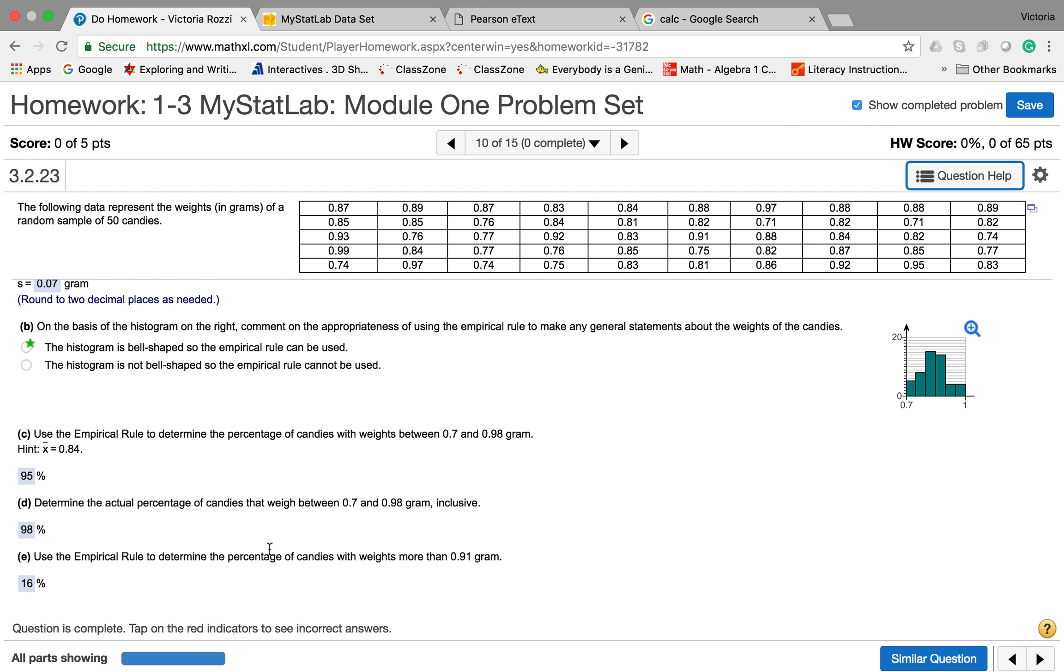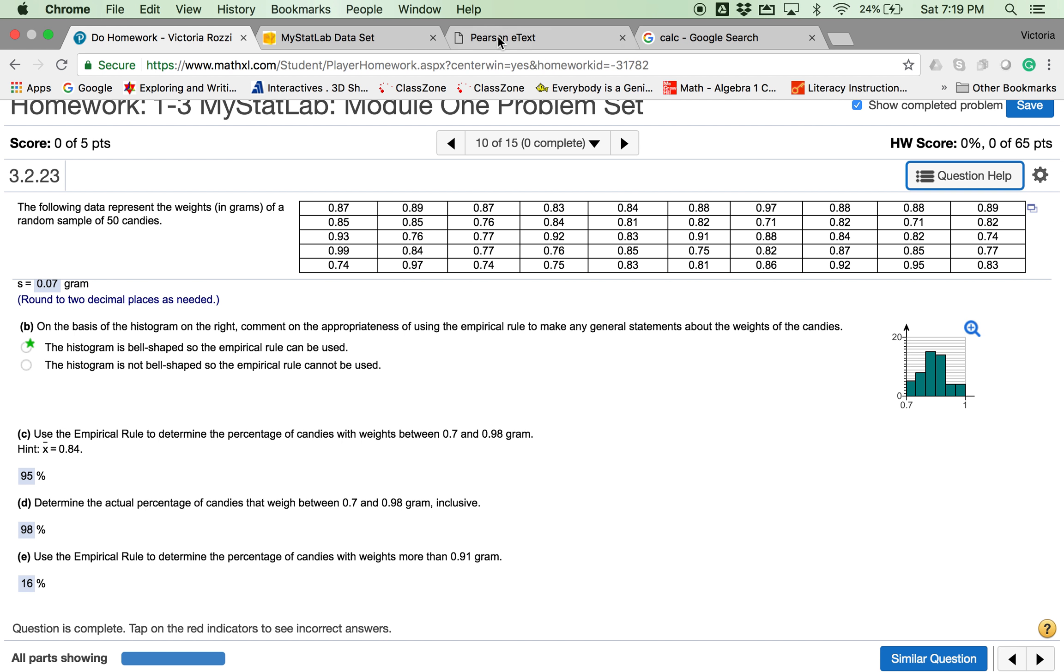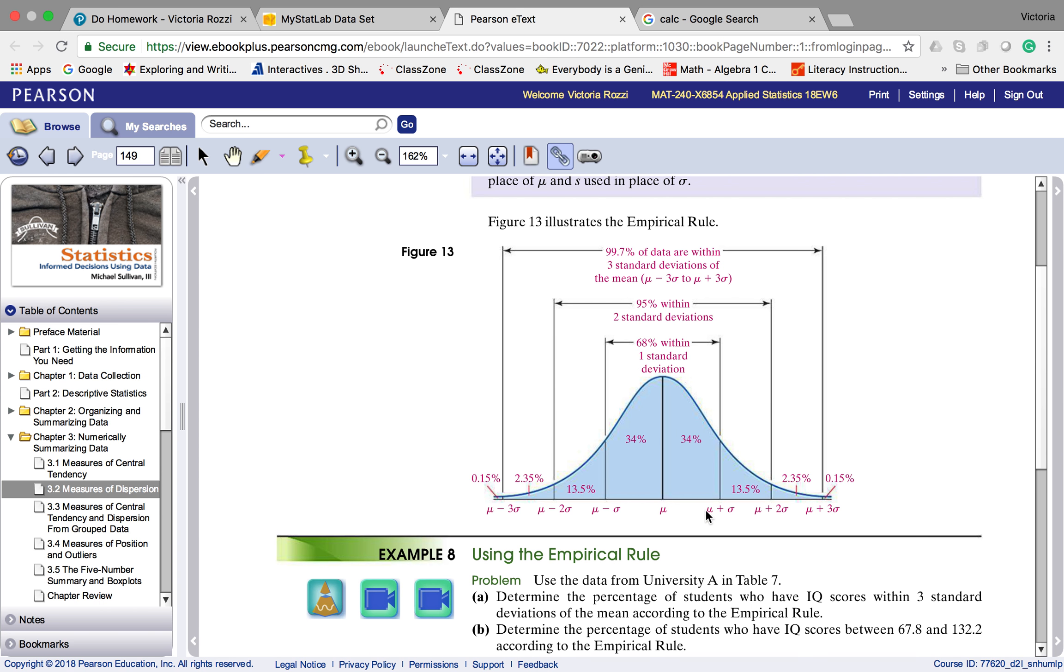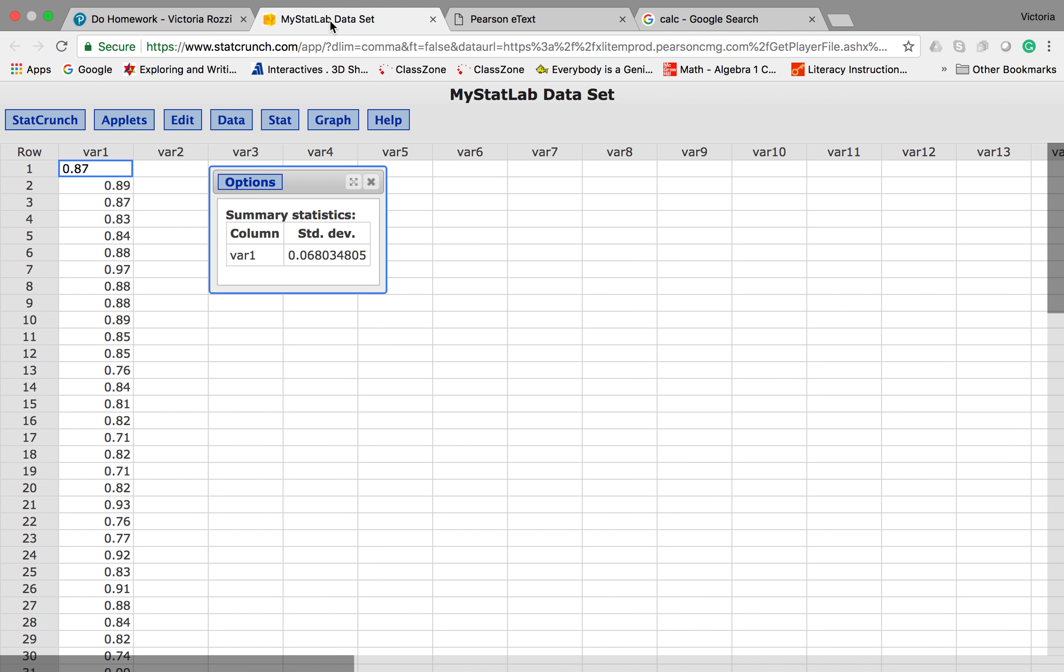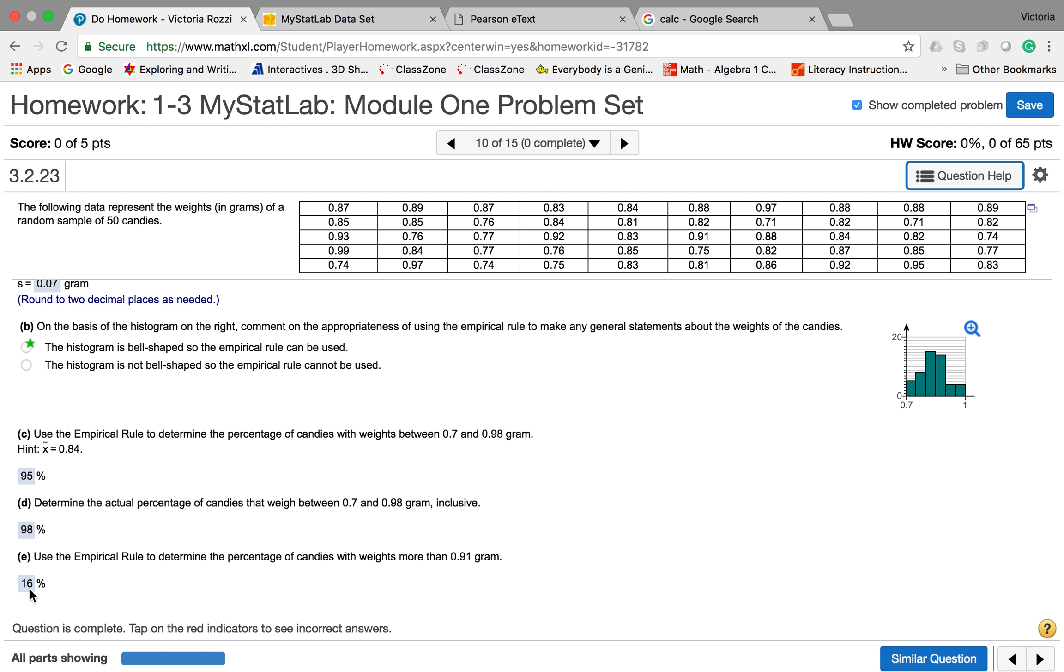Then we're going to use the empirical rule again to determine the percentage with weights more than 0.91 grams. Now, more than 0.91, if you look at your little thing here again, hopefully you have your drawing, 0.91 is one standard deviation from the mean. It's 0.84 plus 0.07. What we're going to do is we're going to add up all the values here. So, we do 13.5, 2.35, and 0.15. And if you add those together, that's going to get you your 16%.